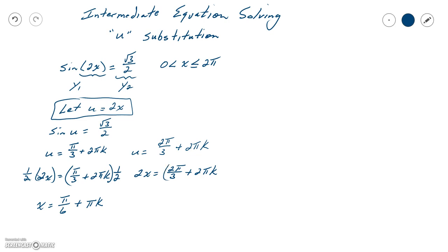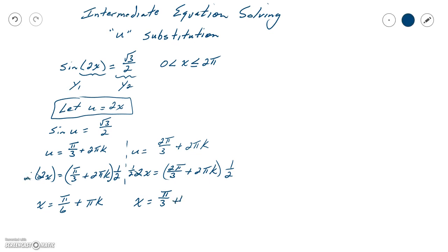Over here, I can do the same thing. I'm going to multiply by 1 half, multiply both sides by 1 half. Those are going to reduce, and then I get x equals π over 3 plus πk.